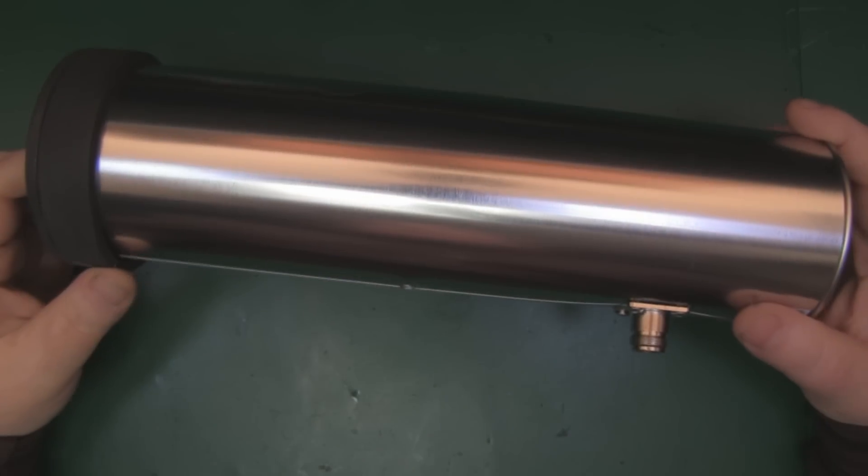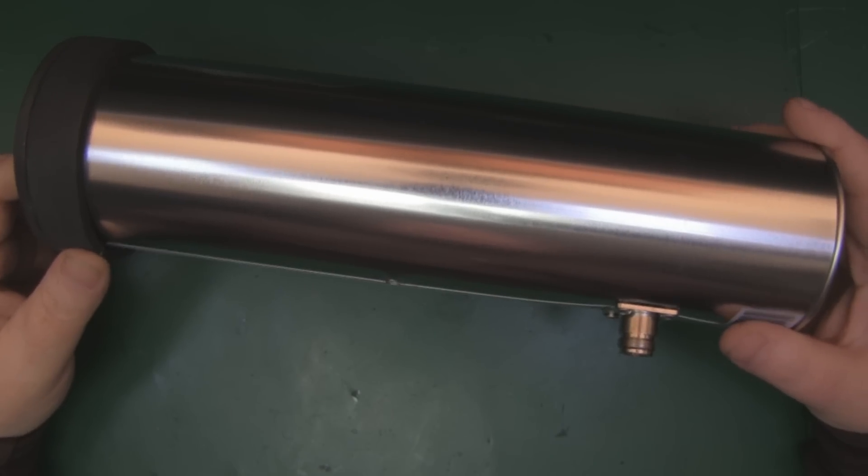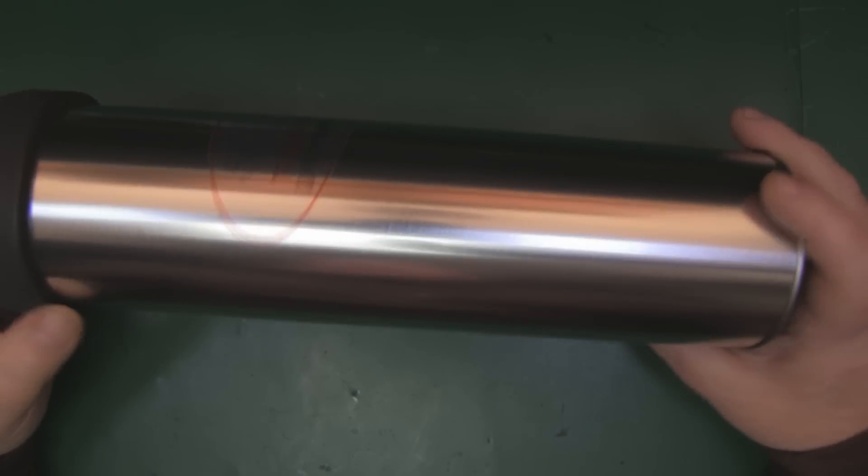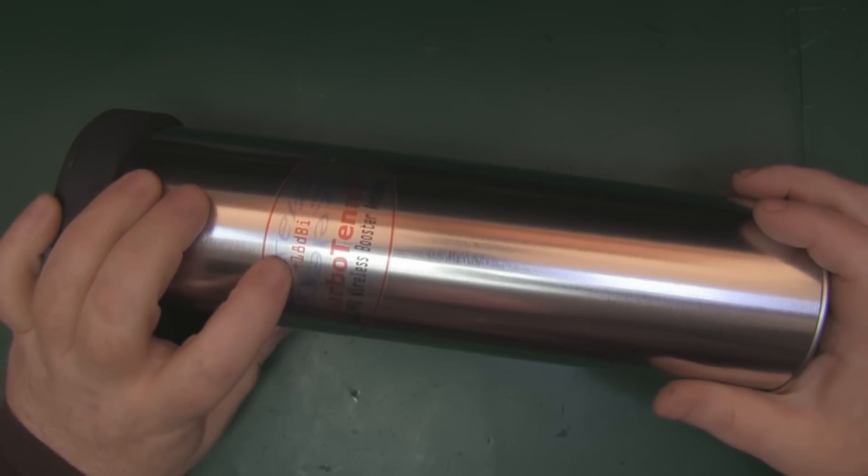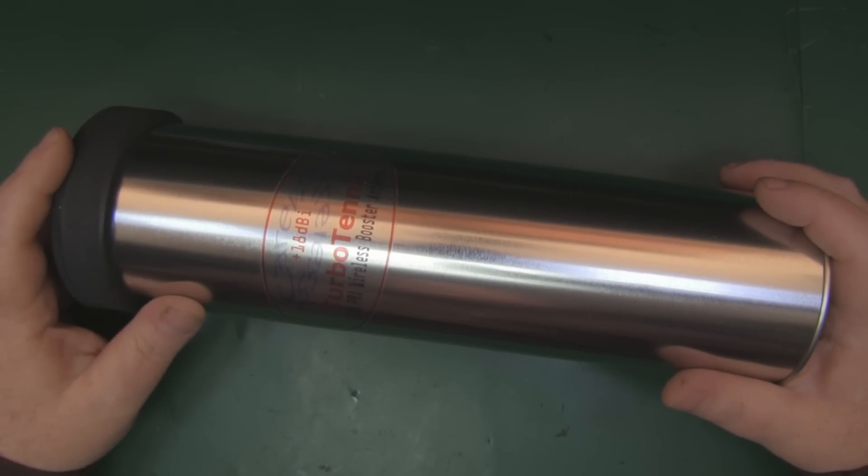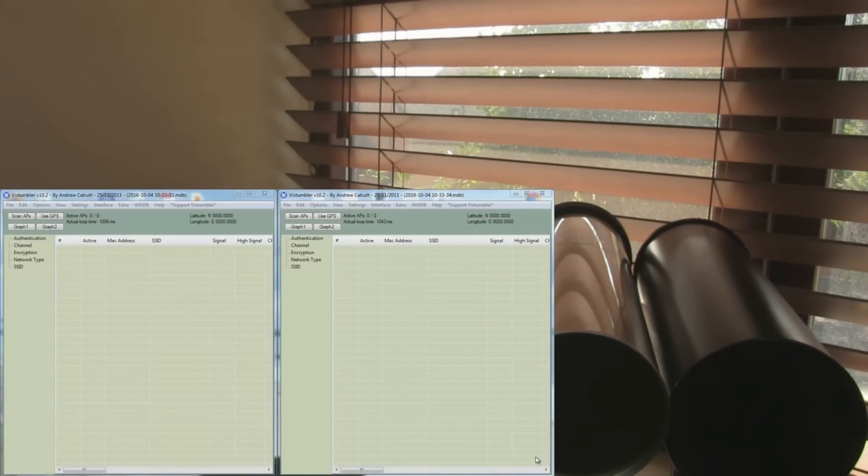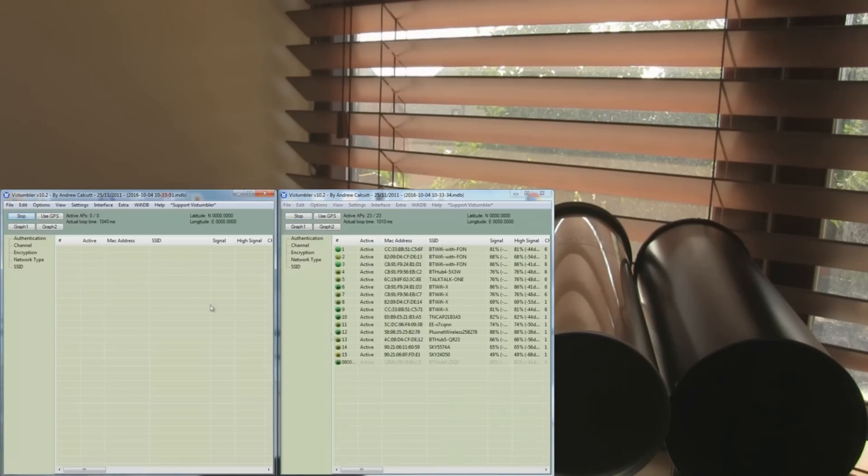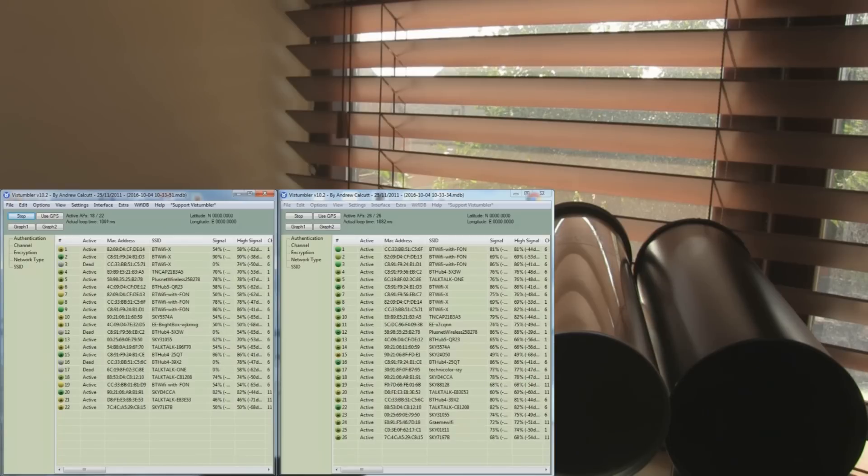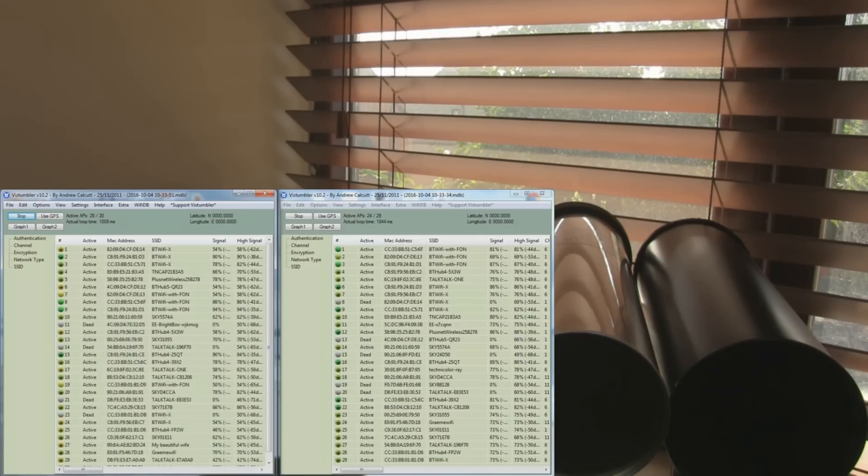Before we open this up, I thought it'd be useful to give it a quick test side by side with my cantenna, just to see how much an 18 dBi cantenna outperforms my 11 dBi. I've got both with identical alpha cards. I've got mine on the right and the Turbo Tenner on the left. Let's let them load up. They seem to be very similar at the moment.